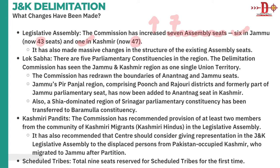For Lok Sabha, there are five parliamentary constituencies in the region. The commission treated Jammu and Kashmir as a single UT and redrew the boundaries of some constituencies. For example, Anantnag's boundary was redrawn, and the Peer Panjal region comprising Poonch and Rajouri districts — which were formerly part of Jammu's parliamentary seat — have now been added into the Anantnag seat in Kashmir.